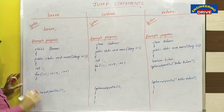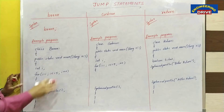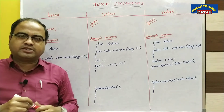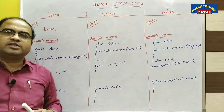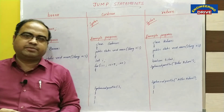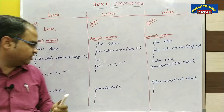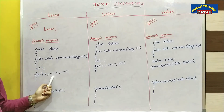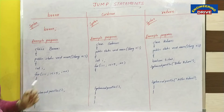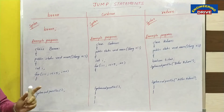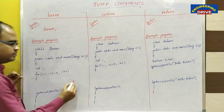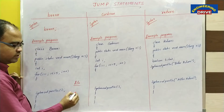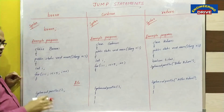In our previous part on iteration statements, I already discussed how we can display a sequence of numbers using while, do-while, and for loops. Now, using a similar program with a for loop, I want to display numbers 1 to 5. The expected output is 1, 2, 3, 4, 5 — five numbers.